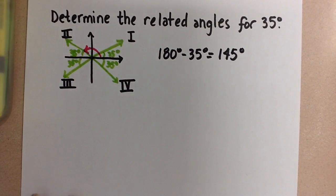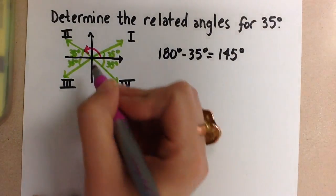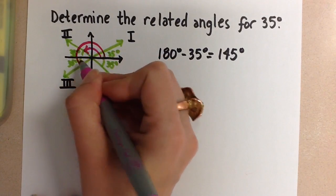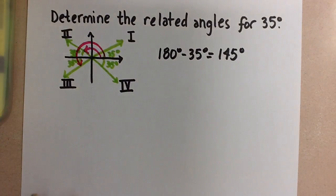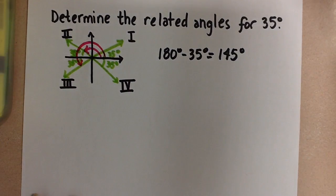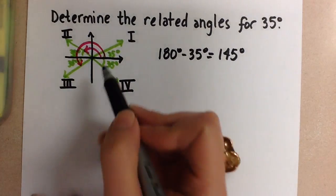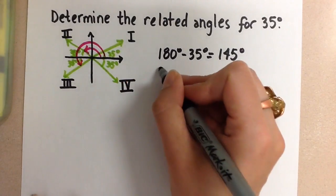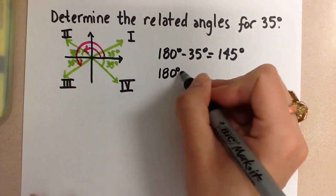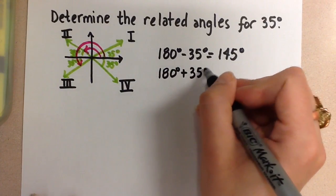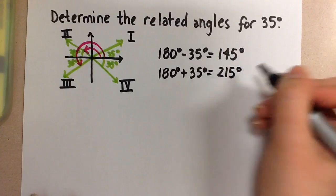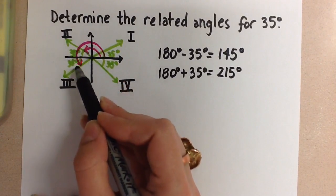We're going to do this again now for the next quadrant. So we're going to go from the positive x-axis counterclockwise around to this terminal arm to get the next related angle. So for this one, we can do 180 degrees plus 35 degrees. 180 degrees plus 35 degrees gives us 215 degrees. So that's the angle that lands in the third quadrant.